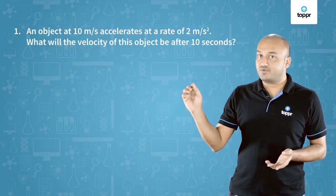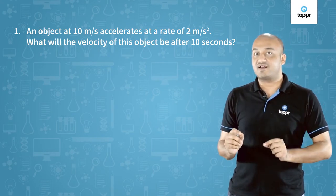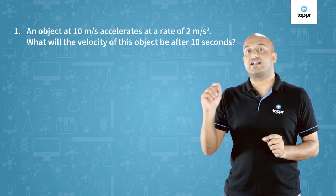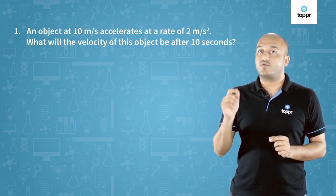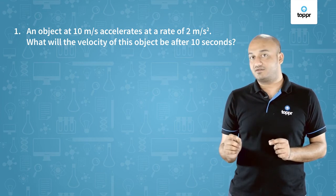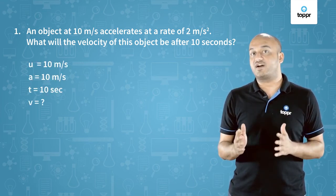This question says there's a body which is moving at 10 meter per second and then it is accelerated at 2 meter per second squared for 10 seconds and we are asked to find out the value of the final velocity. We know u, we know a, we know t, we are expected to find v.